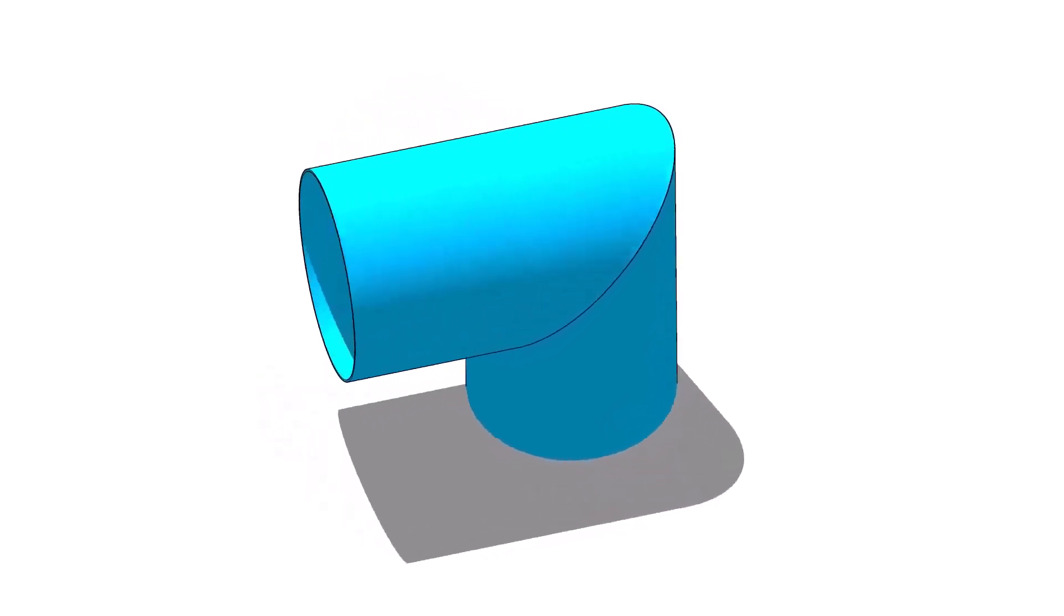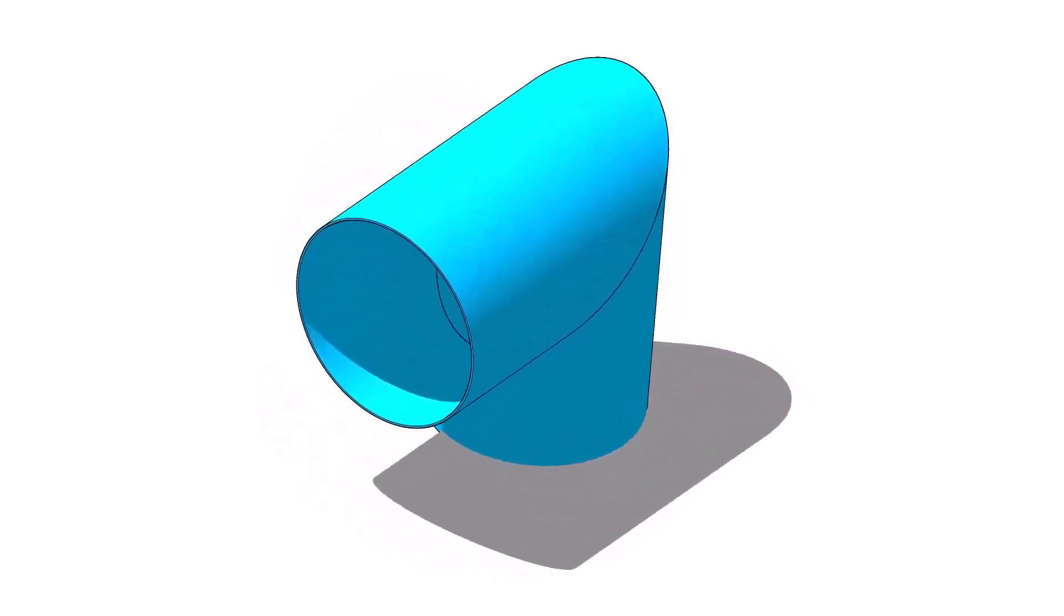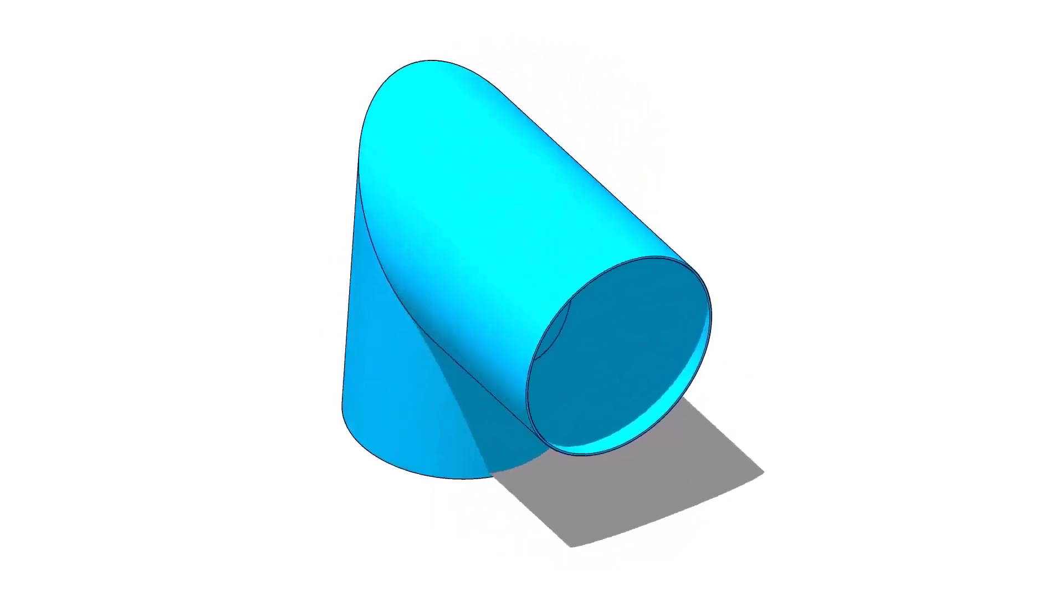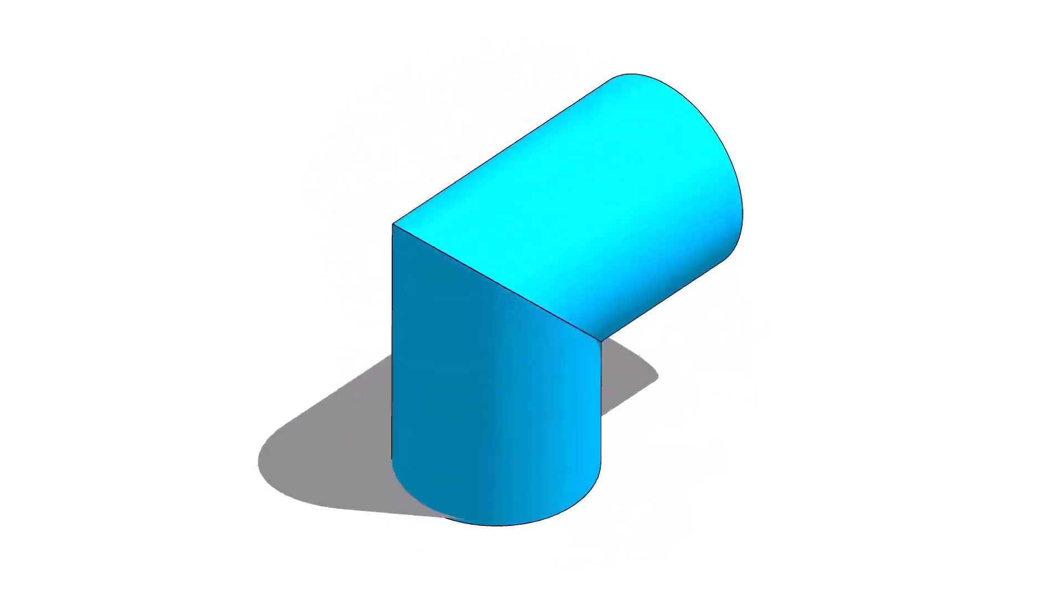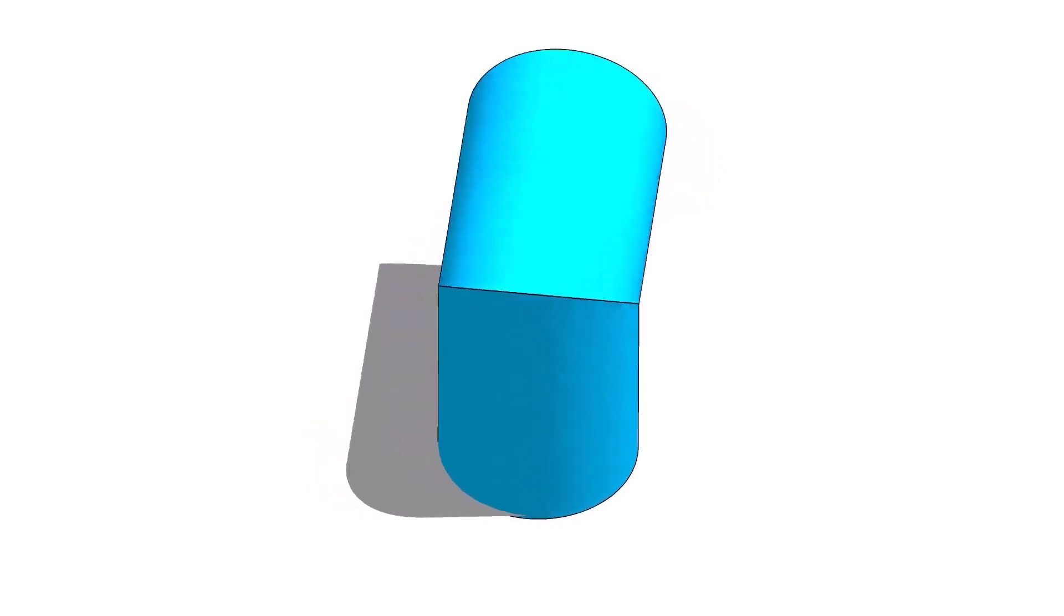Miter bends or miter elbows are very important in piping construction because sometimes the standard elbows cannot be used because of the situation or the high cost of ready-made bends.